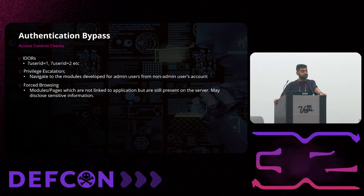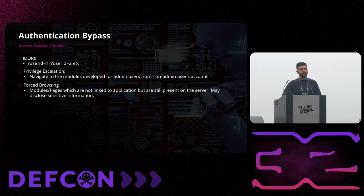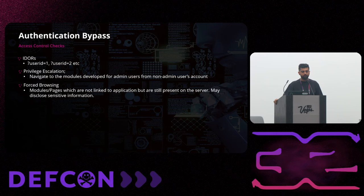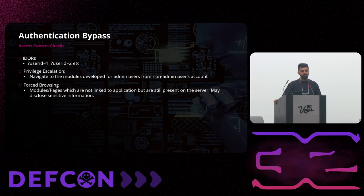The other vulnerability is access control checks. IDORs are best friends — we can use them to perform account takeovers and authentication bypasses. How can you take over accounts? For example, if an application is performing sensitive activities like change password or update profiles by just checking a user's ID, and sometimes it's in hidden parameters, you can use a client-side proxy tool like Burp Suite and just modify the user ID. If the application is vulnerable, you will be able to take over the victim's accounts.